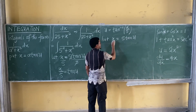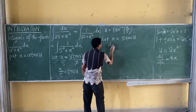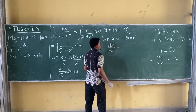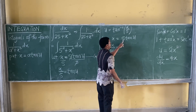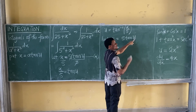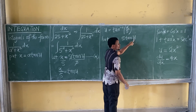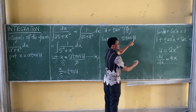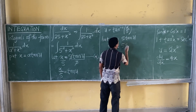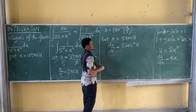Differentiate this with respect to this — I'll have dx over du equal to... this is a constant. Please, if I differentiate tan(x) what do you get? Sec squared x. Differentiate tan(u), what do you get? Sec squared u. So it becomes 5 sec squared u.